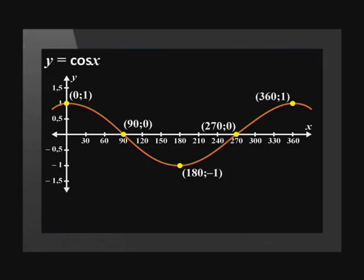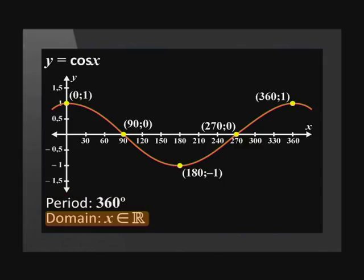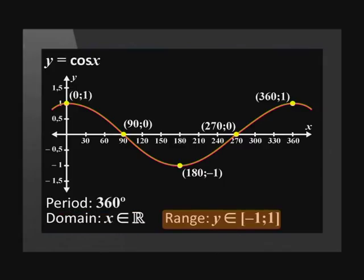Plotting these points and joining them with a smooth curve gives us this shape. The period of a cosine graph is 360 degrees. The domain of a standard cosine graph is x is an element of real numbers. The range of the standard cosine graph is y is an element of [-1,1].